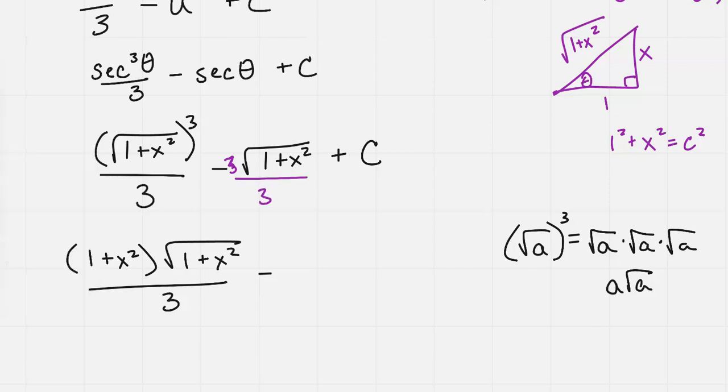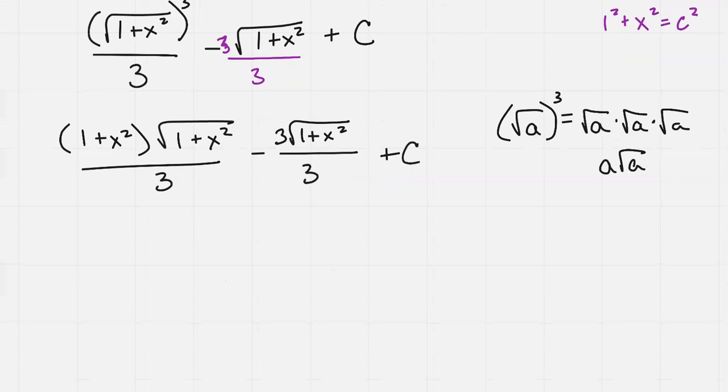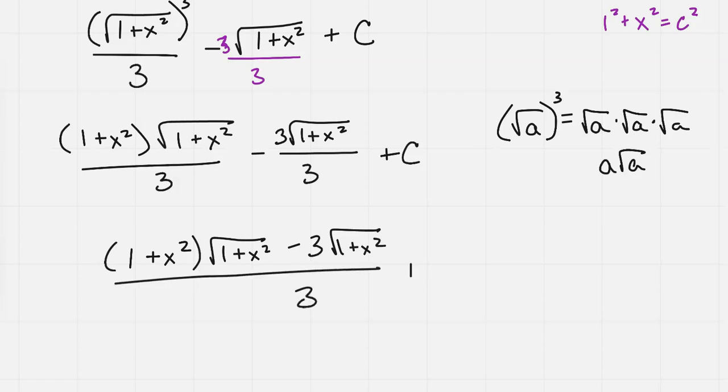And if we want to make this all over one division bar, then I could multiply 3 times 3 over 3. I'm doing this because a lot of book answers will show it this way. I get 3 square root of 1 plus x squared all over 3 plus c. These can be written over one single fraction bar now.